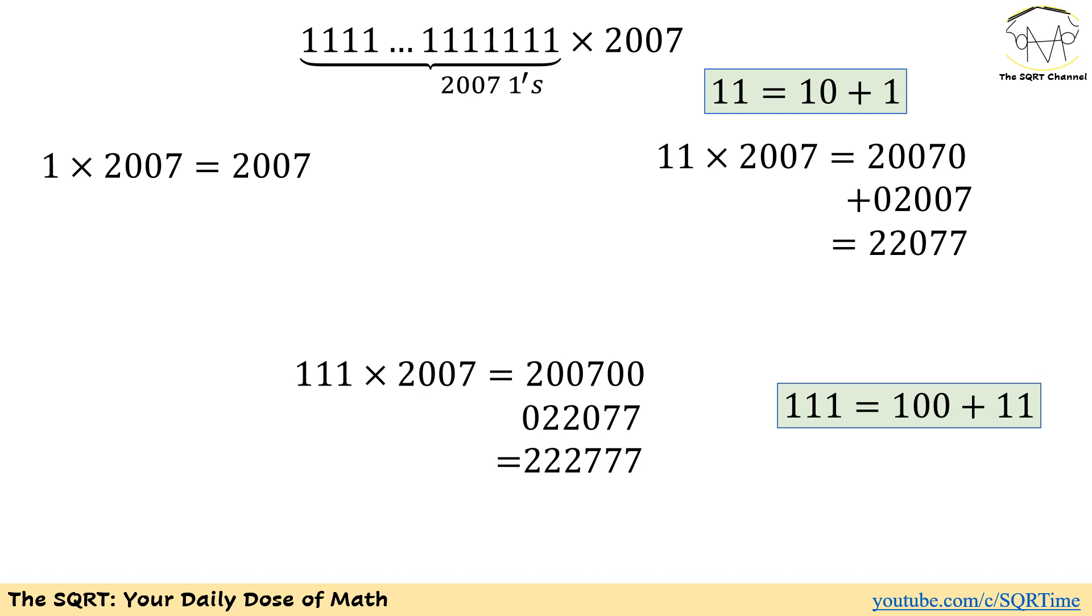Instead of having 2007 ones in the original problem, we are going to start with just 1. One times 2007 is going to be 2007. Instead of having 1, if we have 11 or 2 ones in the first number, we are going to have 11 times 2007.